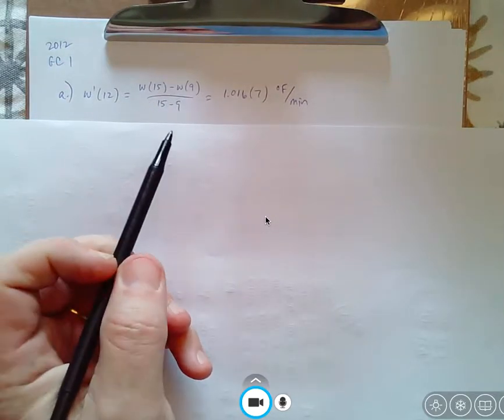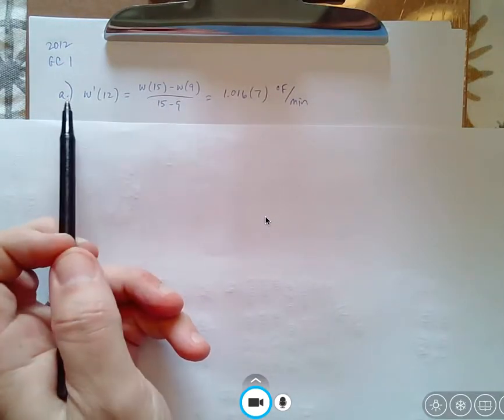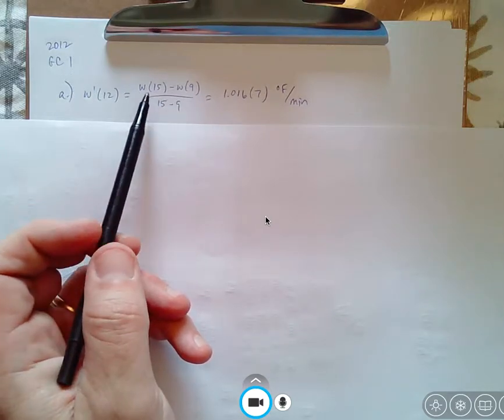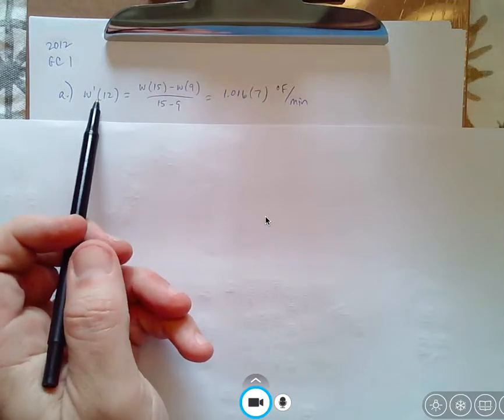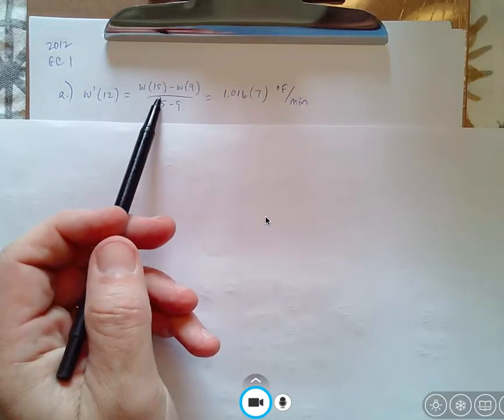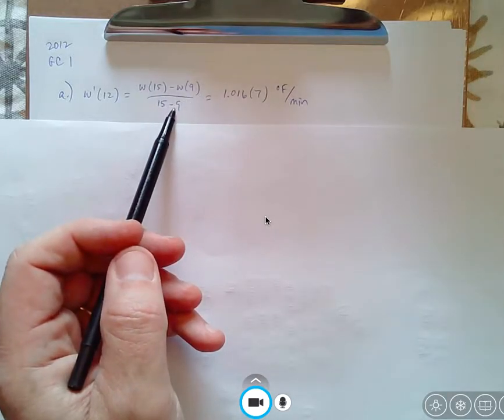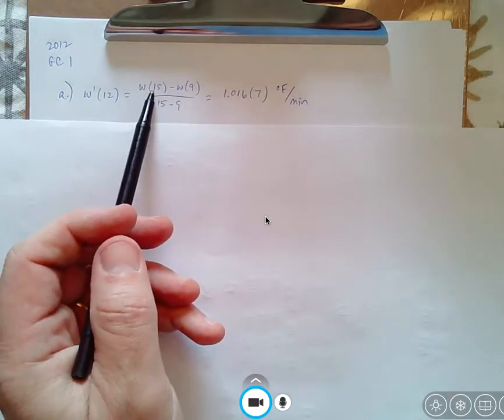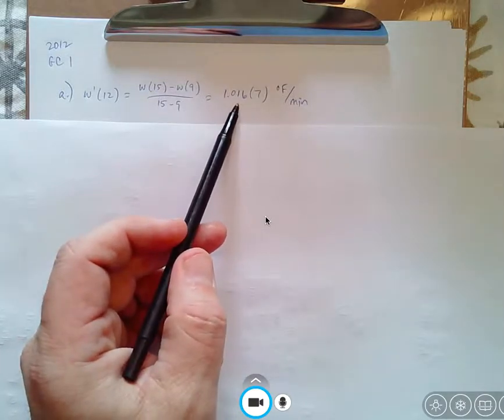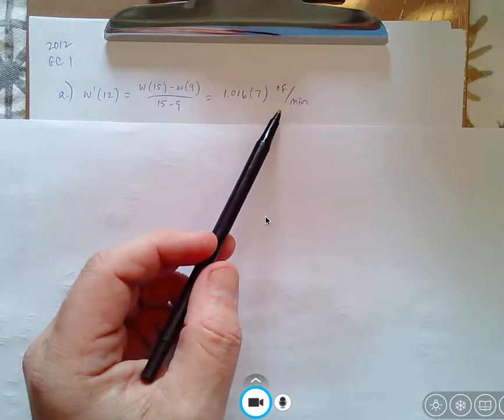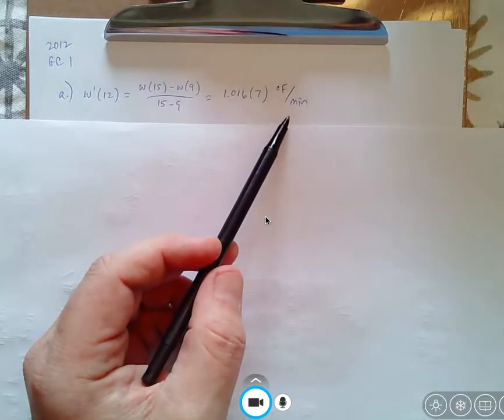The first question, again, consult the table for the 2012 graphing calculator one. The table will tell you that w'(12), you have to approximate between 9 and 15 and just essentially find the slope. So use the table to plug in the values, and you should get the answer 1.016 or 1.017, and the units are important, degrees Fahrenheit over minutes.